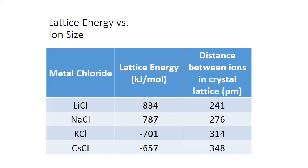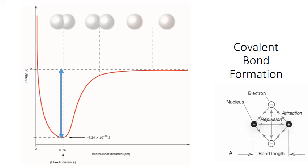We also see that the lattice energy is the most negative for the smallest distance between the ions. This indicates the greatest reduction in potential energy of the system, or the most energy actually released in the formation of that crystal lattice. Covalent bonds are also formed because of a reduction in the potential energy that occurs as two atoms are brought together.